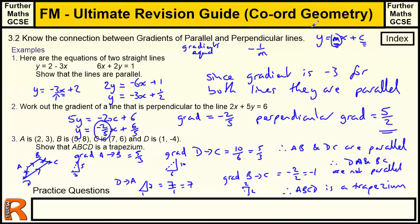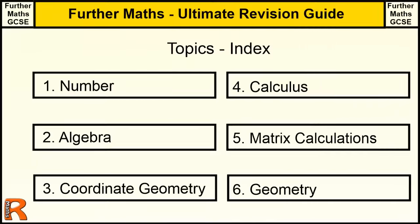Key ideas: the only real formula you need for coordinate geometry of straight lines is y equals mx plus c. For parallel lines, the gradients are equal — look at the m value. For perpendicular lines, use the negative reciprocal: if it's a whole number, do 1 divided by that number and change the sign; if it's a fraction, turn it upside down. That's section 3.2 — good luck.